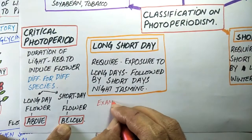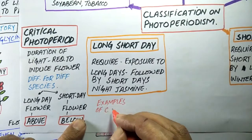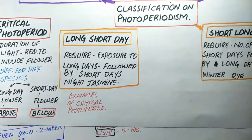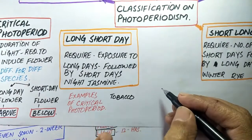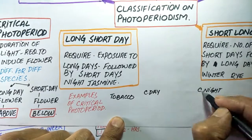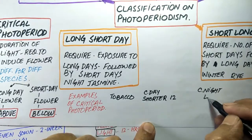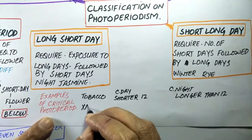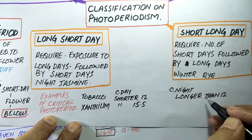For example, tobacco, a short day plant, has a critical day length of 12 hours. It means it only flowers when the day length is shorter than 12 hours — it may be 10 hours, 8 hours, or 7 hours — but it does not flower above this critical day length. If we provide 13 hours of light, it will remain vegetative.